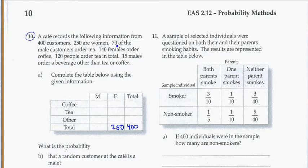And 70 of the male customers order tea. So it's not 70 males total, that's 70 that have ordered tea. So male and ordering tea would be in that category there. 140 females order coffee. So females that ordered coffee would be 140.